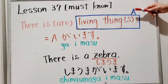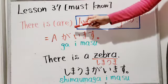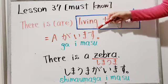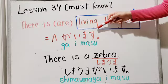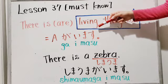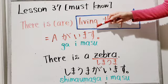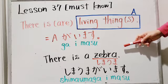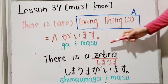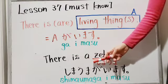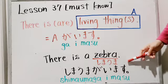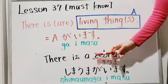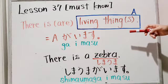If you want to say 'There is' or 'There are' for living things in Japanese, you can use the が particle, but you need to say が います instead of が あります. For example, if you want to say 'There is a zebra,' in Japanese you say シマウマがいます。instead of シマウマがあります。